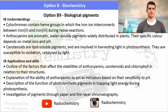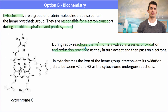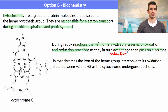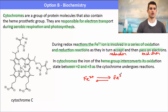Cytochromes are a group of protein molecules that contain the heme prosthetic group and they're responsible for electron transport during aerobic respiration and photosynthesis. The reaction involves the Fe2+ ion in a series of oxidation and reduction reactions as those Fe2+ ions both accept and pass on electrons — reduction is accepting, passing on is oxidation. In cytochromes the iron of the heme group converts from 2+ to 3+. We can write a half equation: Fe2+ is in equilibrium with Fe3+ plus an electron, and depending on the reaction it can undergo reduction or oxidation.